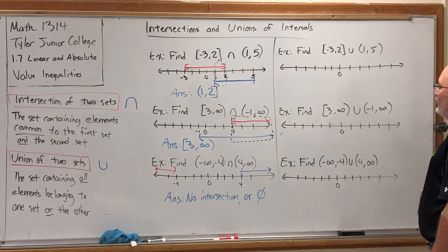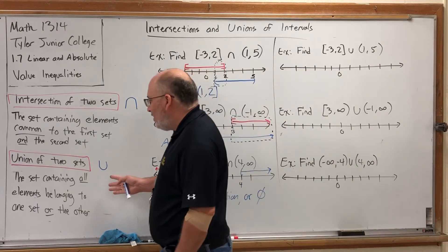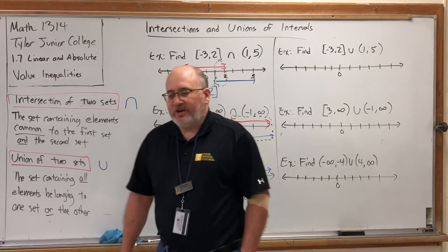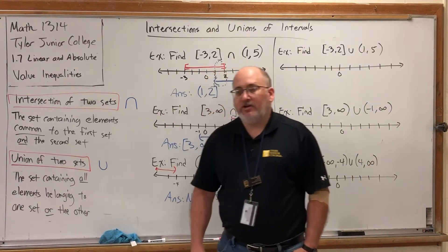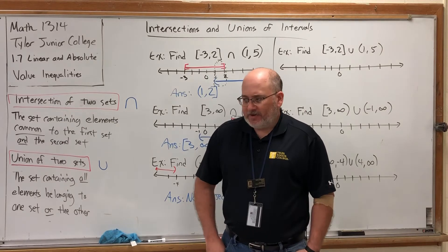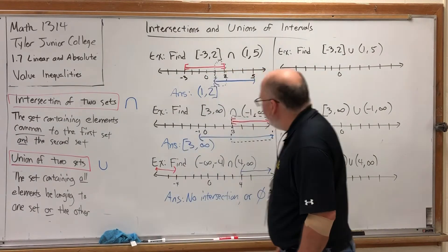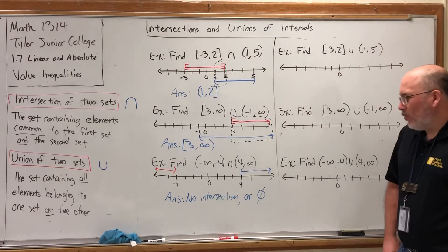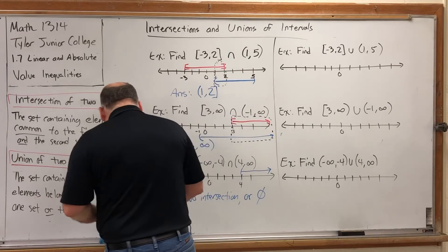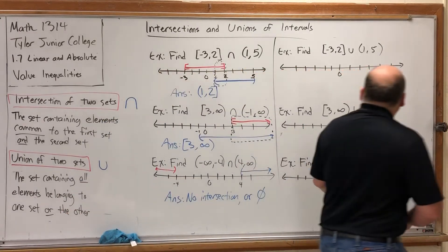Now let's talk about union. Union is the set containing all elements belonging to one or the other. Intersection is the set of elements belonging to the first and the second. Union is the set of elements belonging to the first or the second, or possibly both. The word union means to join things together, so in these next three examples, we're going to join the intervals together into one big interval.